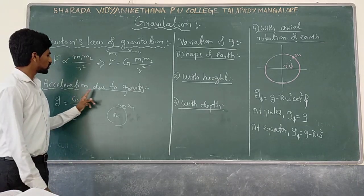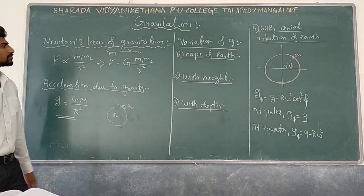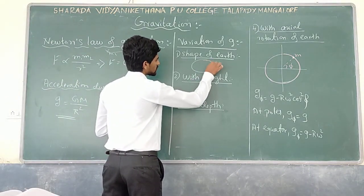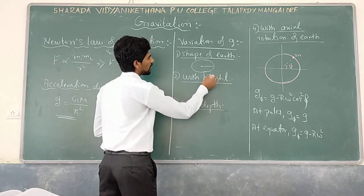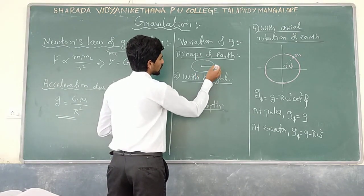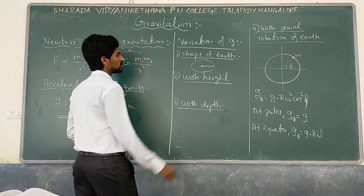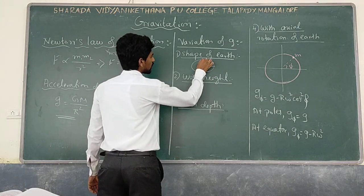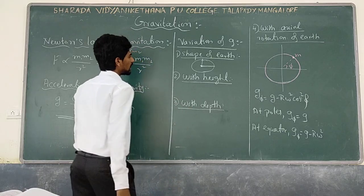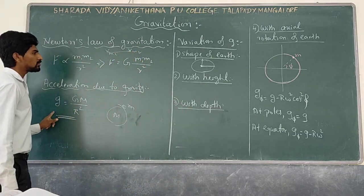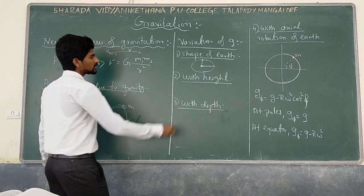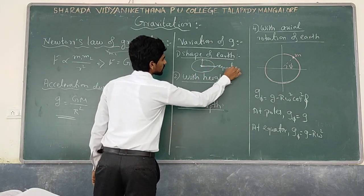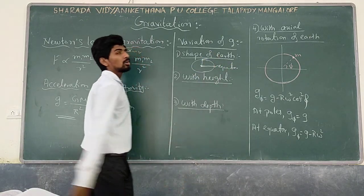Now, how will acceleration due to gravity vary? Earth is not a perfect sphere. The distance from the centre of the Earth to the equator is more compared to the distance from the centre to the poles. If distance is more, then g will be less. So g is less at the equator and it will be more at the poles.